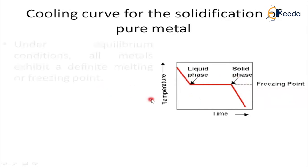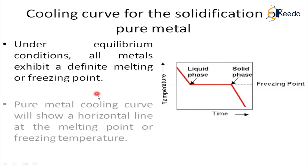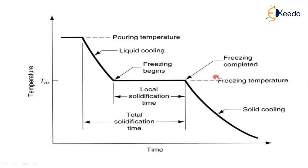Under equilibrium conditions, this graph is valid. All metals in the periodic table exhibit a definite melting or freezing point. Whatever pure metal we consider — at 99% purity — the cooling curve will show a horizontal line at the melting point or freezing temperature. Let us now observe the various features and points in the cooling curve for pure metal.